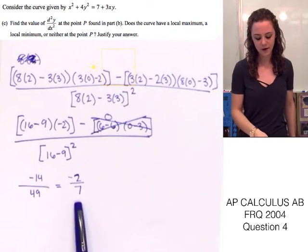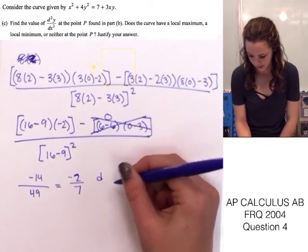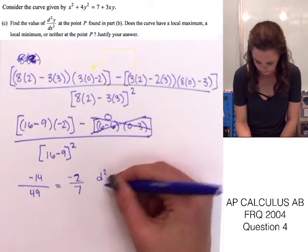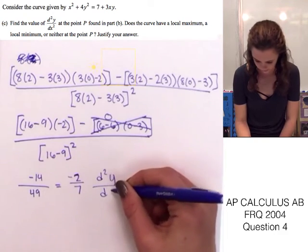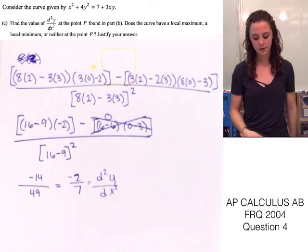And that's going to simplify to negative 2 over 7. So now that we found the value of the second derivative, which is this, so I'm going to write that so we don't forget what this one is.